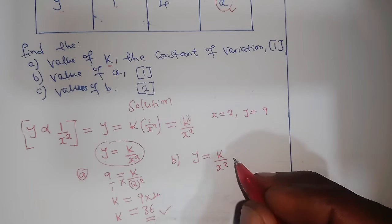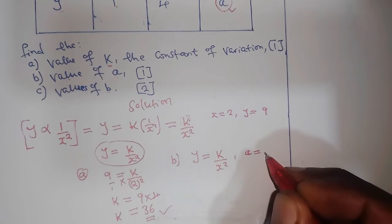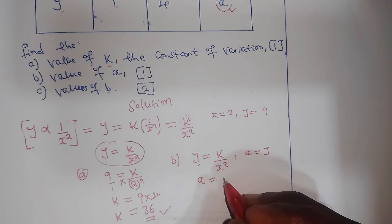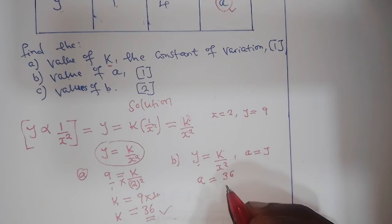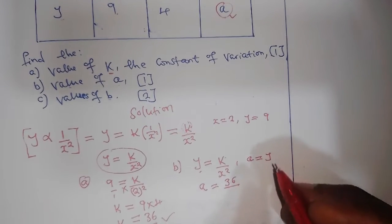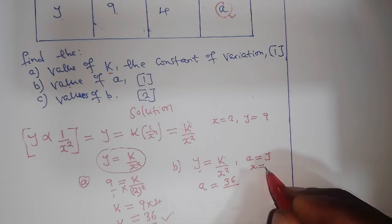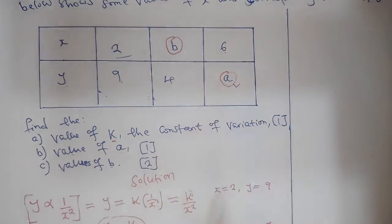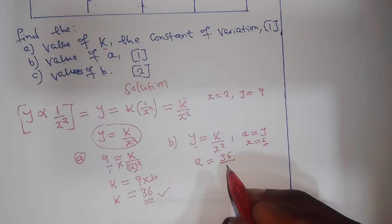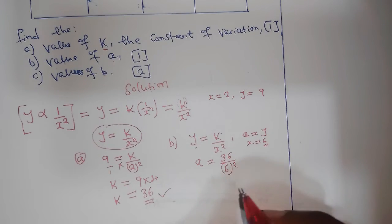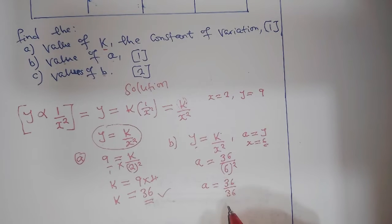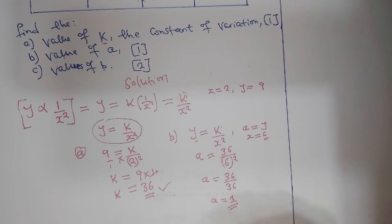Since a represents y and x = 6, we write: a = 36 / 6². That gives a = 36 / 36 = 1. So the value of a is 1.